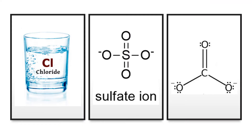Saline-type lakes can be categorized as chloride, sulfate, or carbonate lakes. Chloride lakes have high concentrations of chloride. Sulfate lakes have high concentrations of sulfates. Carbonate lakes have high concentrations of carbonates. High concentrations of these ions lead to high concentrations of salts, which form evaporite minerals like halite and gypsum.